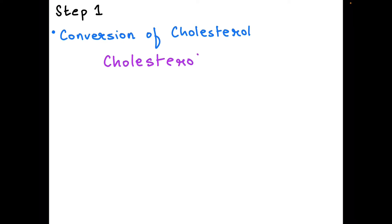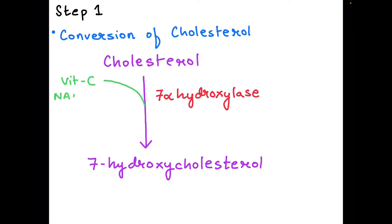Cholesterol is converted to 7-hydroxycholesterol. The enzyme involved is 7α-hydroxylase, and one molecule of vitamin C and NADPH is required for this step. This enzyme is a cytochrome P450 enzyme - it is a mono-oxygenase.